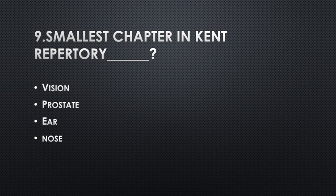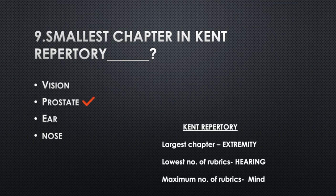Smallest chapter in Kent's Repertory — Option A: Vision, Option B: Prostate, Option C: Ear, Option D: Nose. Answer: Option B, Prostate. Kent's Repertory: largest chapter = Extremities; lowest number of rubrics = Hearing; maximum number of rubrics = Mind.